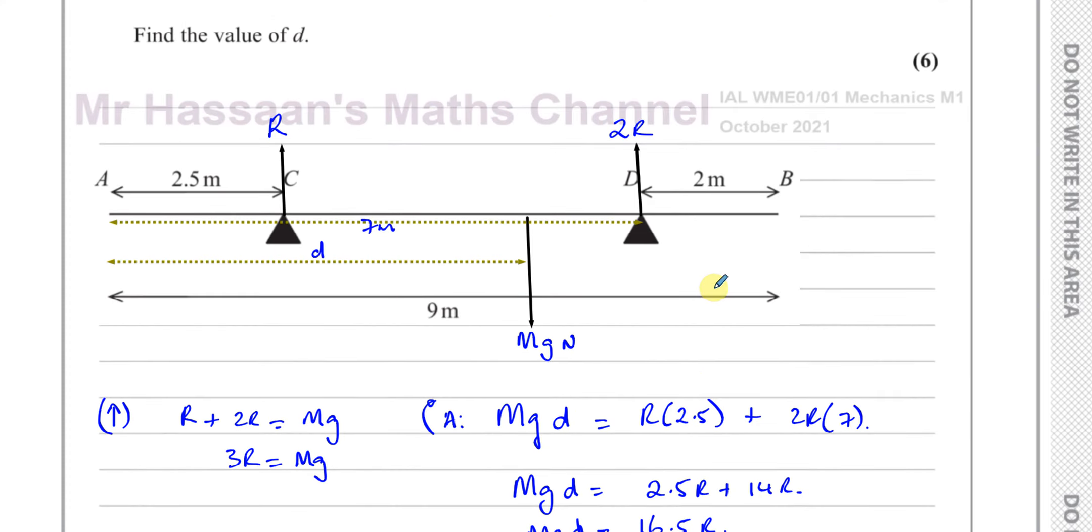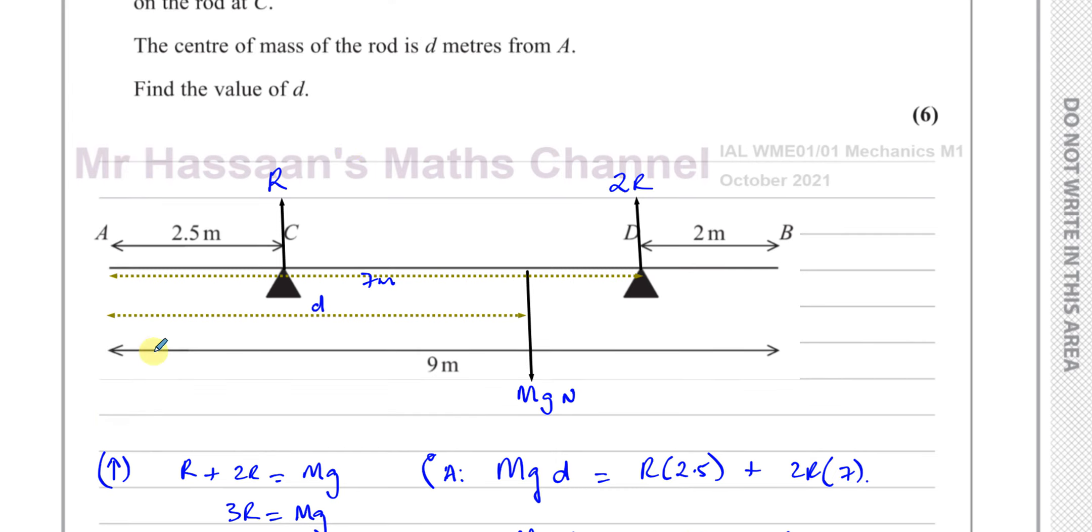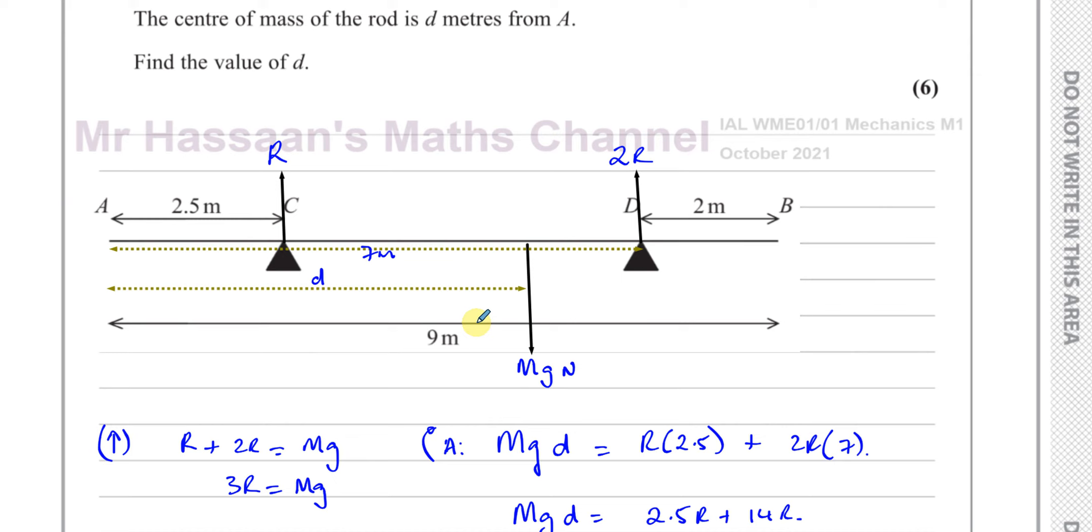So we form two equations. One from resolving the forces vertically because it's in equilibrium. The upward forces and the downward forces balance out. The only forces acting on the beam itself are the reactions from the supports and its weight. Here we are considering just the forces acting on the beam. Of course there's also a reaction from the beam on the support acting equally and opposite. But we're not considering forces acting on the supports, only the forces acting on the beam itself.